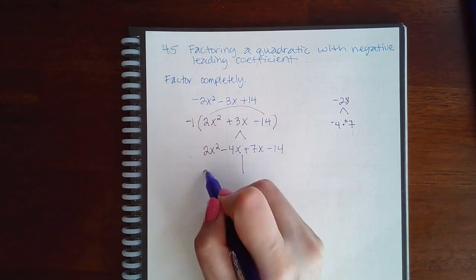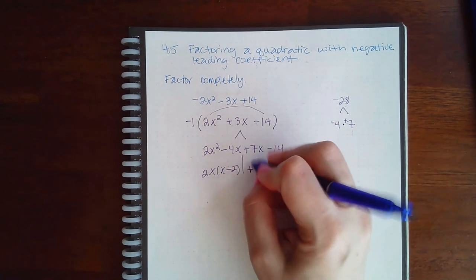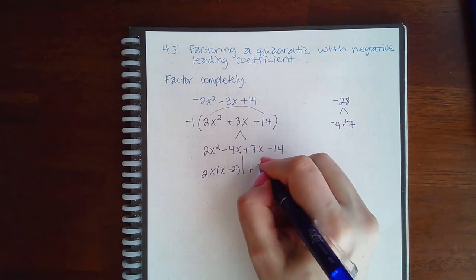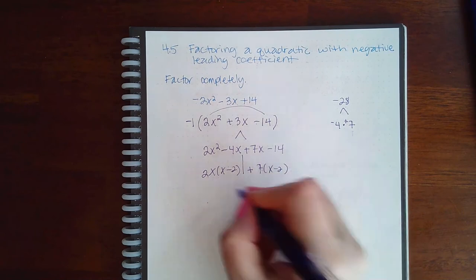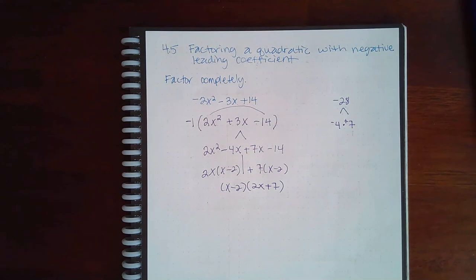Factor by grouping 2x times x minus 2 plus 7 times x minus 2. And they have an x minus 2 in common with 2x plus 7 on the outside.